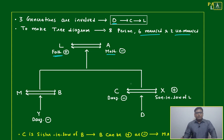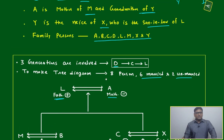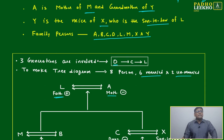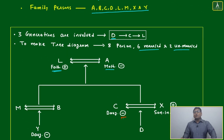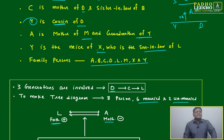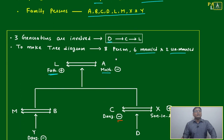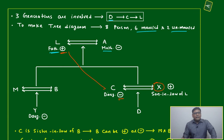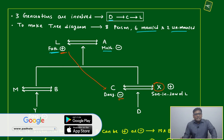We have to decide the gender of each person based on what is given. C is the mother of D, so C must be female — a wife of somebody. X is the son-in-law of L, which means C must be the daughter of L and A. So C is the daughter and X is the son-in-law, making C and X husband and wife.